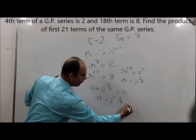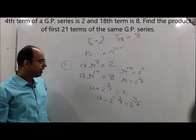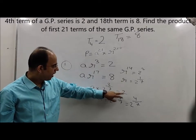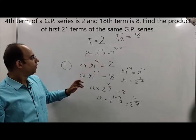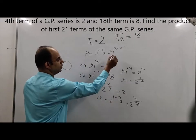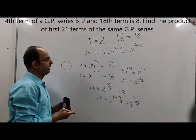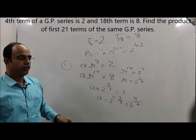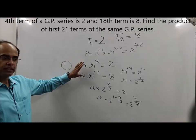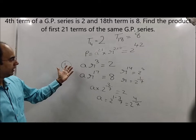We have the value of r = 2^(1/7) and a = 2^(4/7). Putting these values into the product expression a²¹ · r²¹⁰, we get the product P = 2⁴². Hence the product of the first 21 terms is 2⁴². This is the first method of solving.